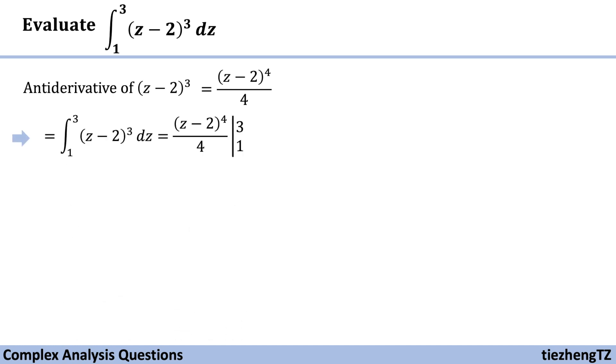All right, so our integral function becomes z minus 2 to the power of 4 over 4 from 1 to 3. And we just need to substitute using 3 and 1 respectively.